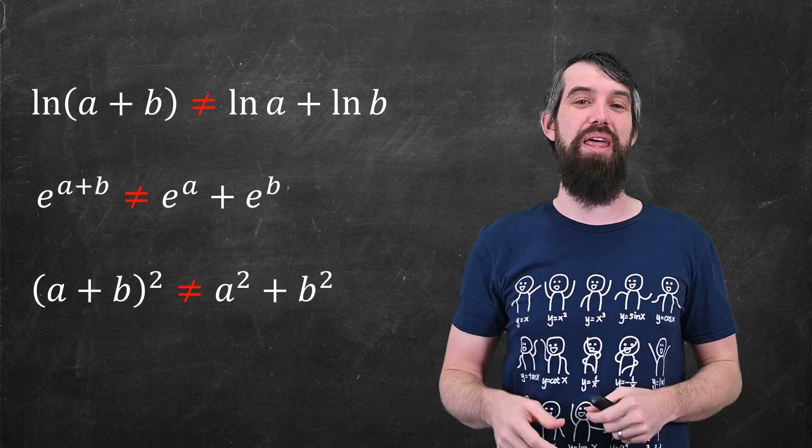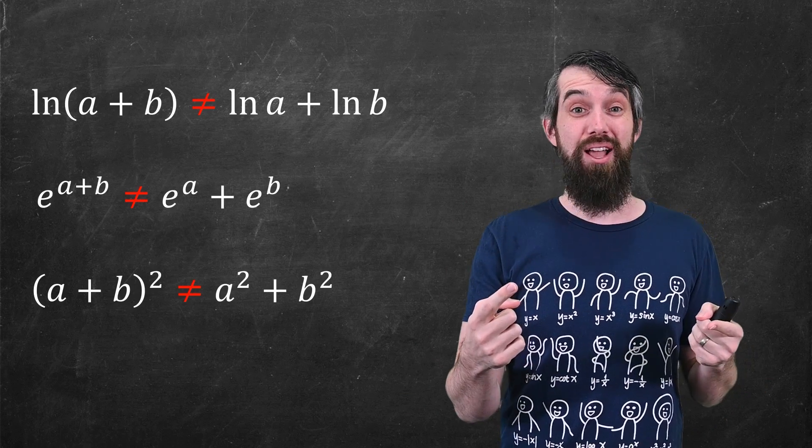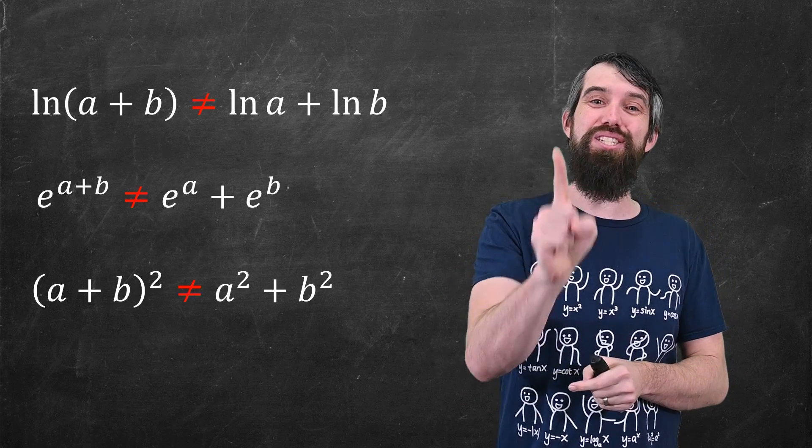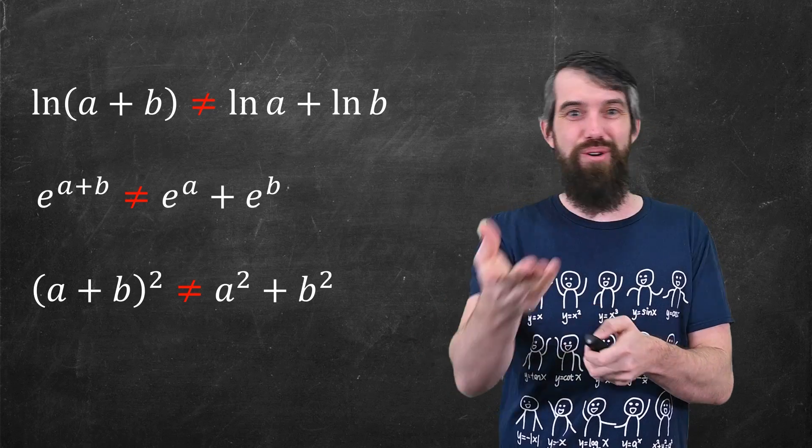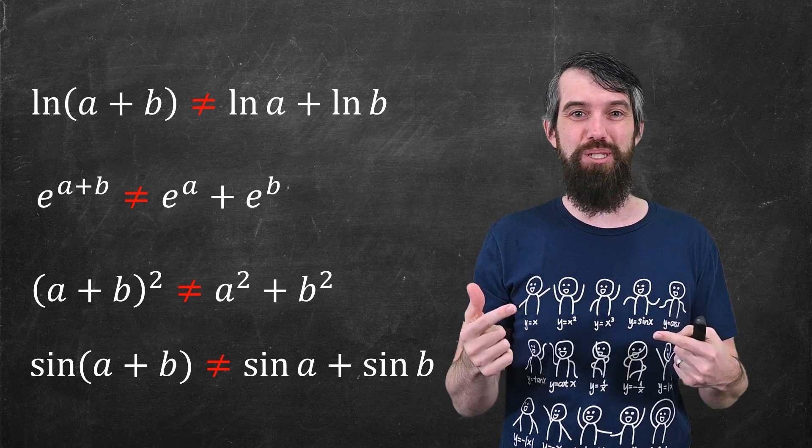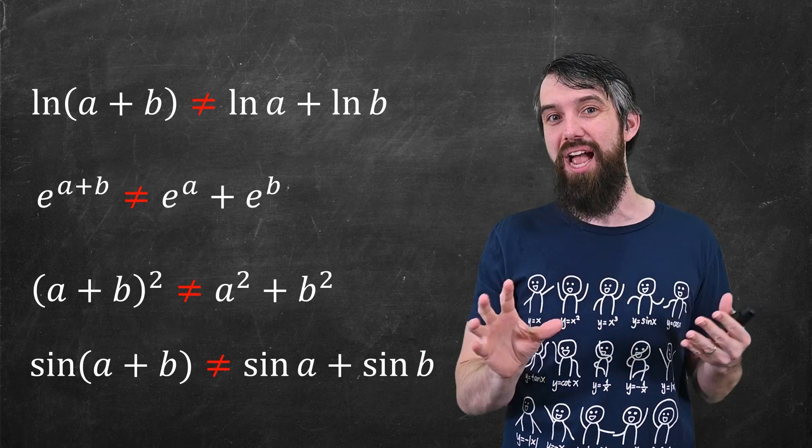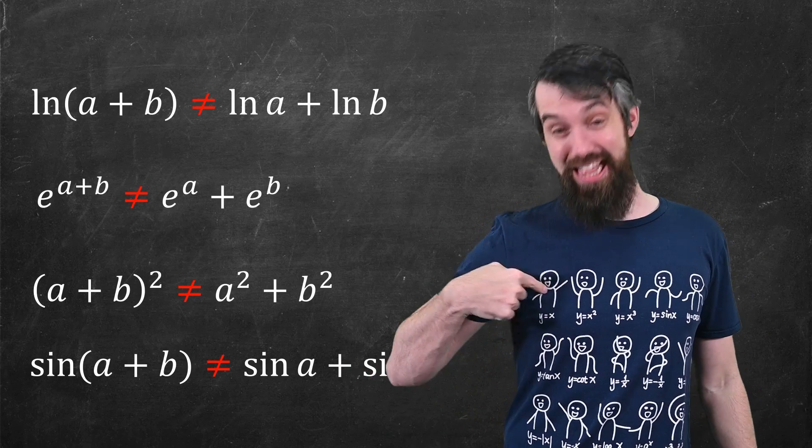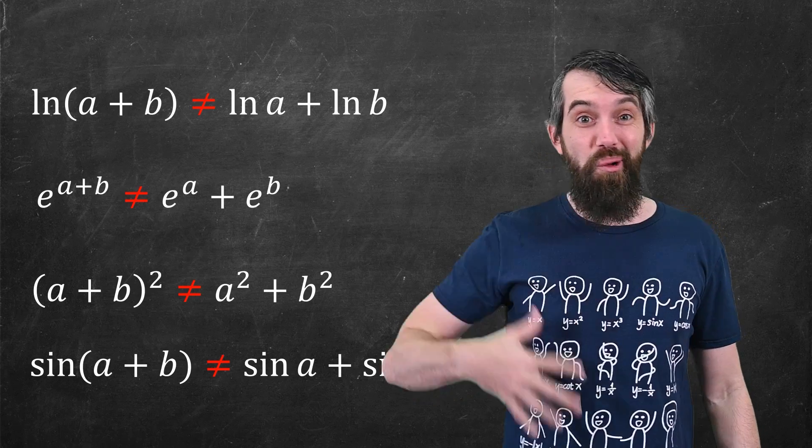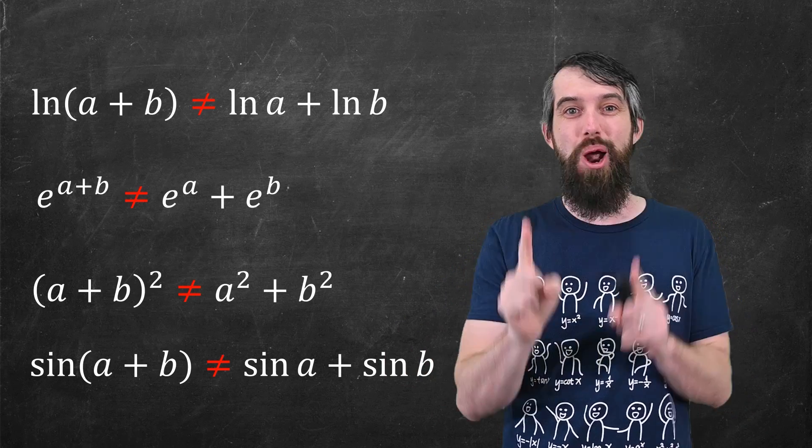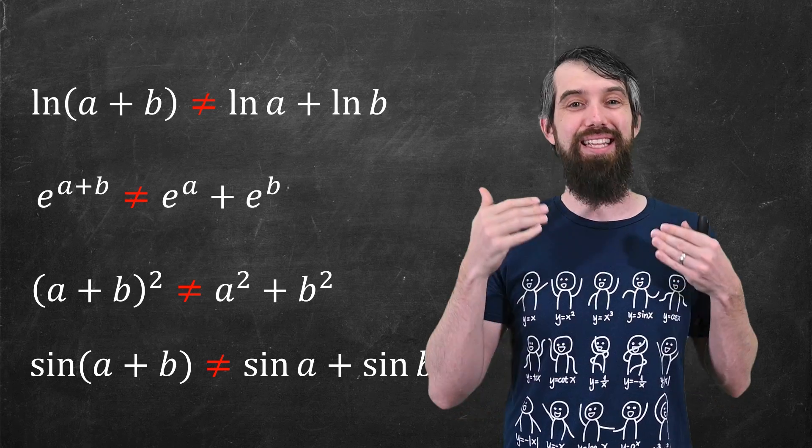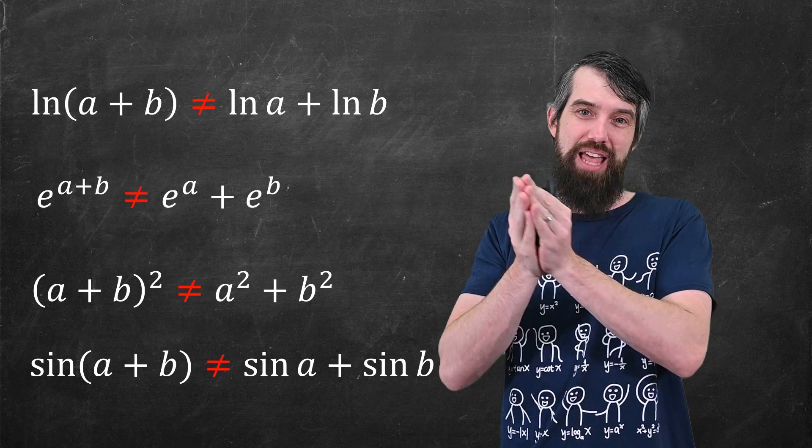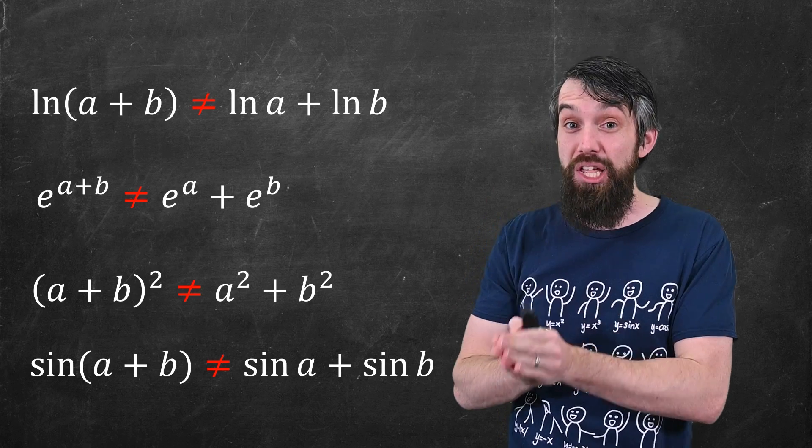This happens all the time. Like, a plus b squared. Well, you could expand out this quadratic. You'd get a² plus b² plus 2ab. There's extra terms. Or sine is another example. Sine of a plus b is not linear. It's not sine of a plus sine of b. Indeed, maybe my shirt can help you out. This one, that's linear. All those other ones, not linear. You cannot use this property of linearity.